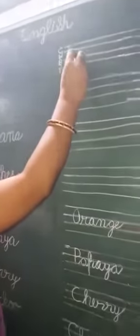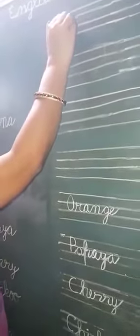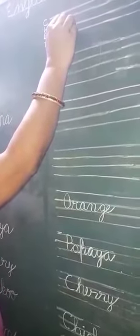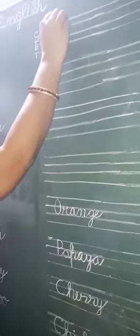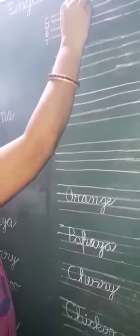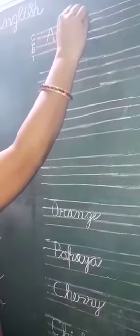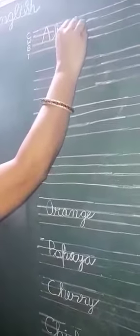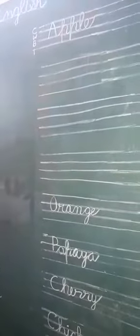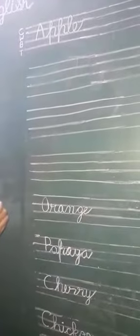Now we have to write capital A. Put your pencil on the waist line. We have to write in cursive: double P, L, E. We don't pick up our pencil while writing in cursive.